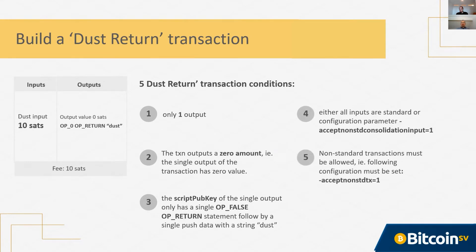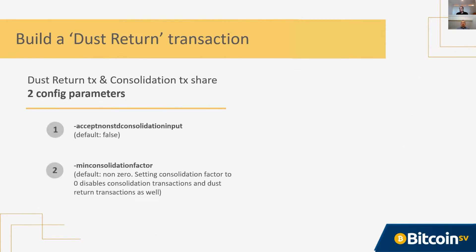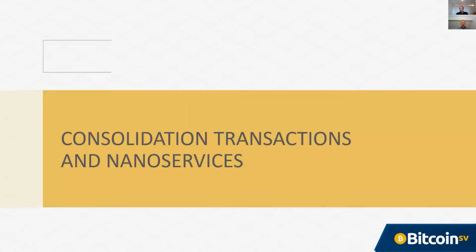There are a couple of additional parameters on the Bitcoin node side. This is a feature that is configurable — you can turn it off if you want. But these details are probably more important for the miners who are operating this as a service. That brings us to the next type of transaction: the consolidation transaction. They actually share a couple of config parameters, with the consolidation factor probably being the most important from the point of view of consolidation transactions.